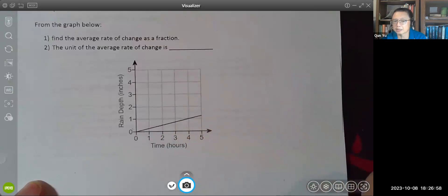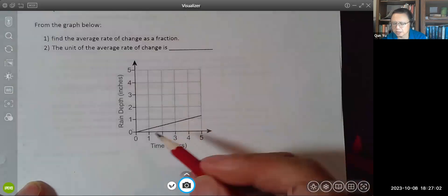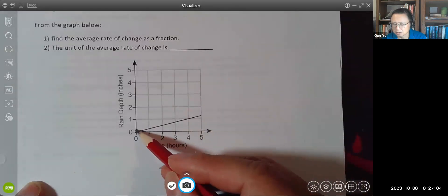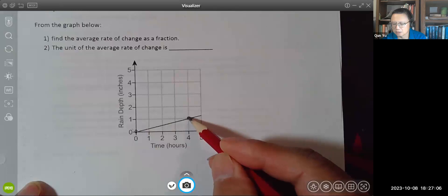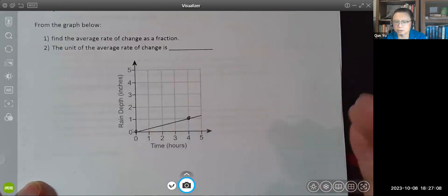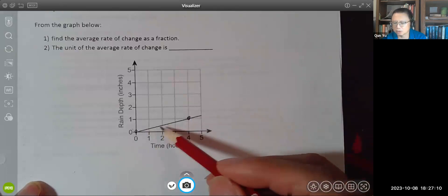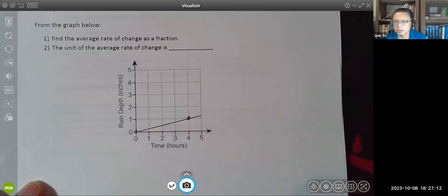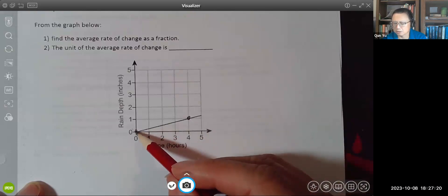But we want to calculate the slope accurately, and that is why we need to identify those special two points where we can read the coordinates very accurately. So to me, this point and this point, these are our special two points. Again, any two points will do the job, but you want to identify those points that can give you accurate reading of the coordinates.